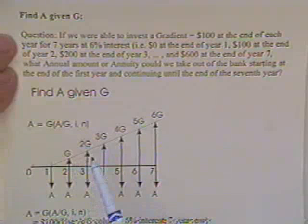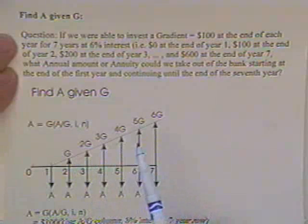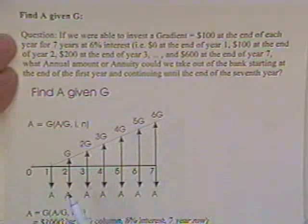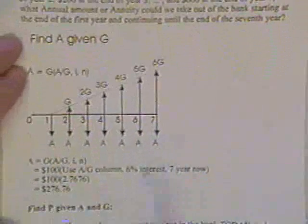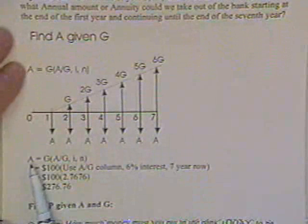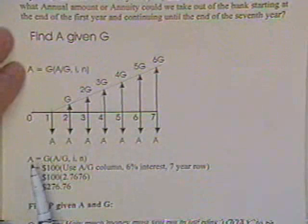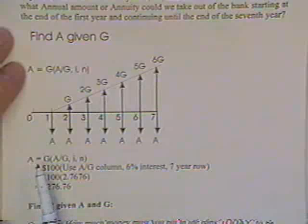$100 at the end of the second year, $200, $300, $400, $500, and $600. And I want to know what A is. When you do that, it's exactly like you did everything else. You want to change a gradient into an annual amount.